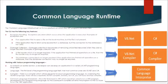Common Language Runtime: The Common Language Infrastructure, or CLI, is a platform on which .NET programs are executed. The CLI has the following key features. Exception Handling: Exceptions are errors which occur when the application is executed. Examples include: if an application tries to open a file on the local machine but the file is not present, or if the application tries to fetch some records from a database but the connection to the database is not valid.